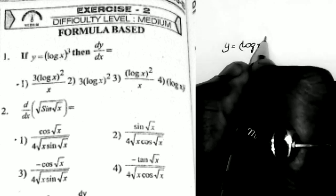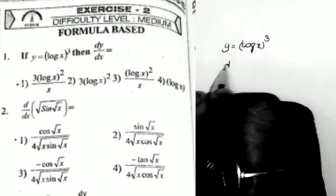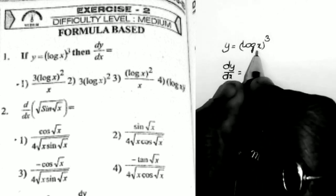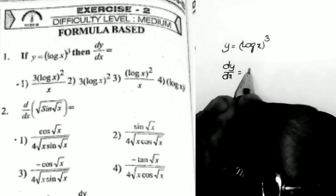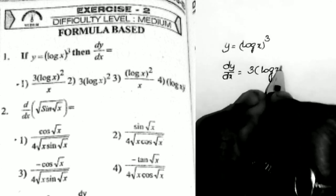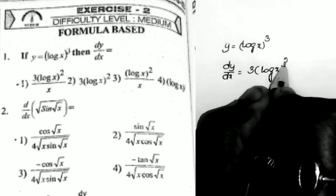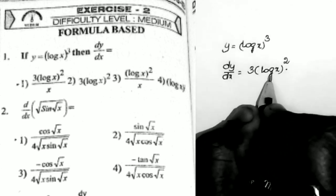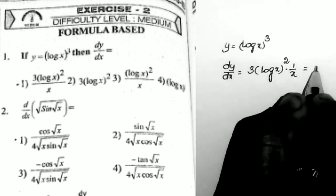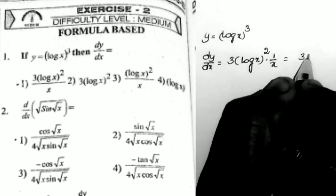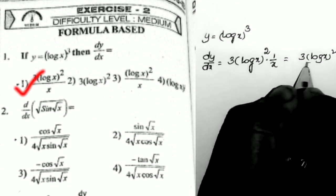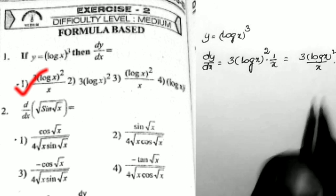We want the value of dy/dx — just taking the derivative. This is in the form of x^n, so the derivative is n·x^(n−1). That is 3·(log x)^(3−1) multiplied by the derivative of log x, which equals 1/x. So the answer is 3·(log x)²/x. That is the first option.